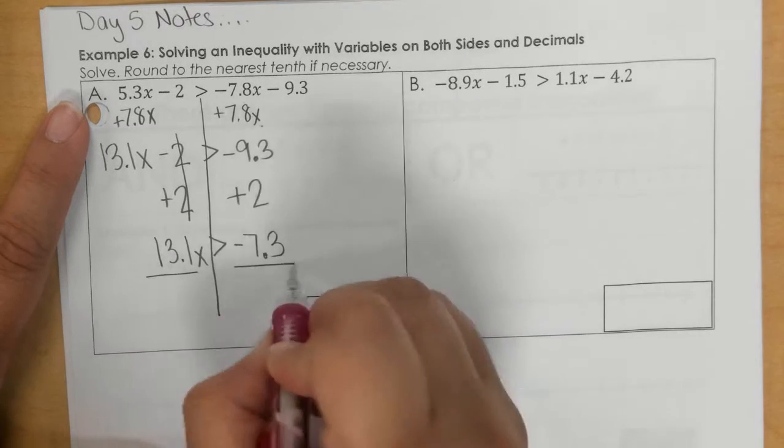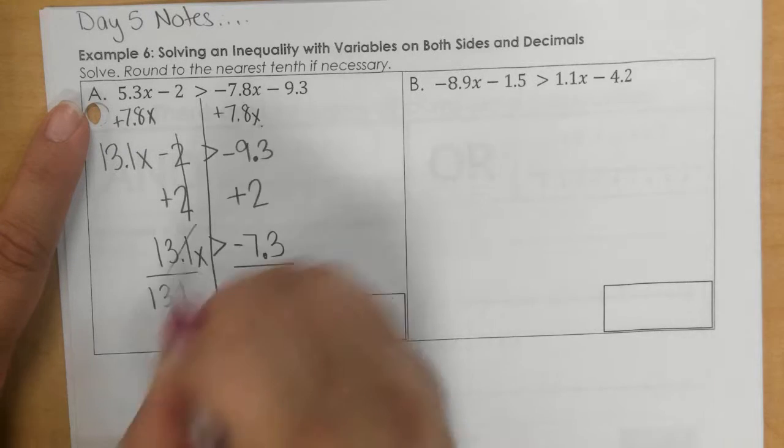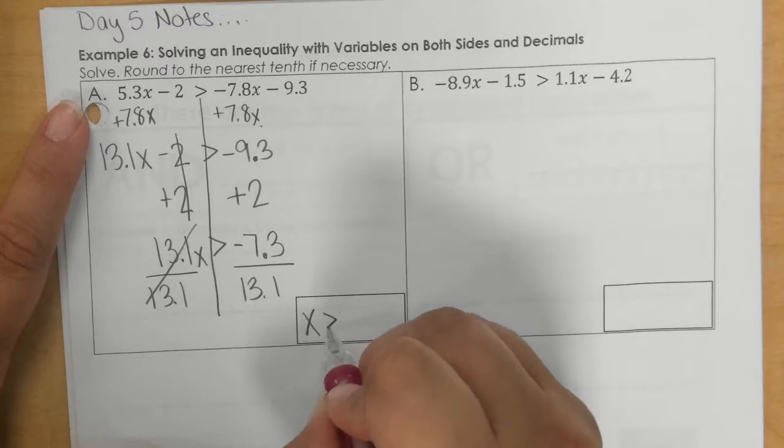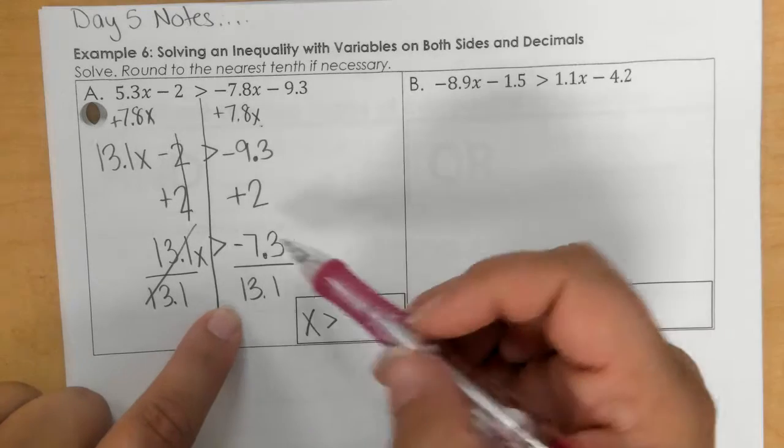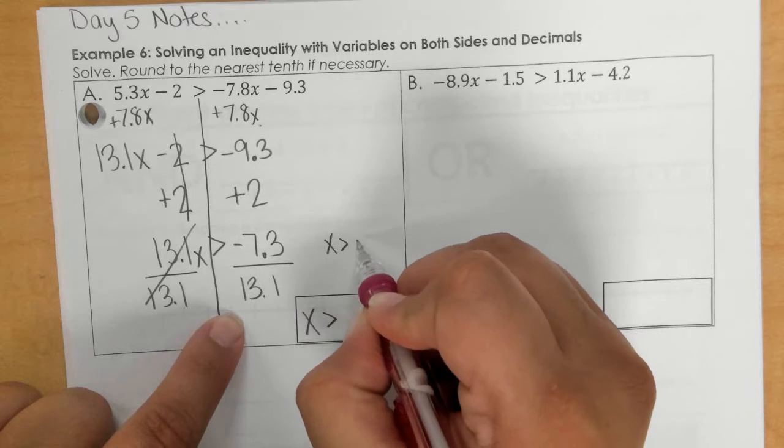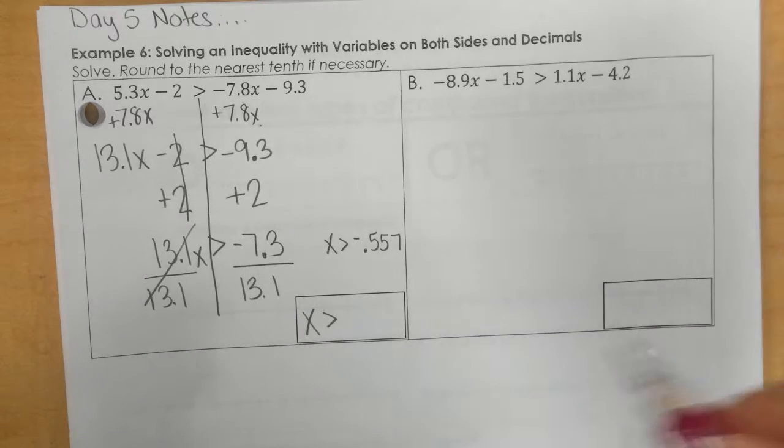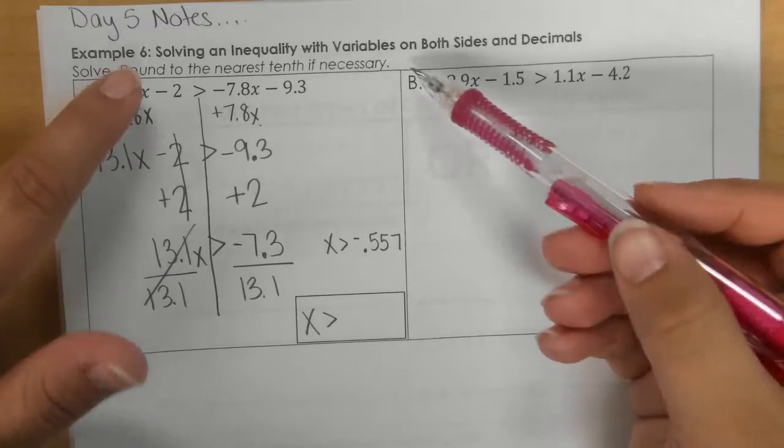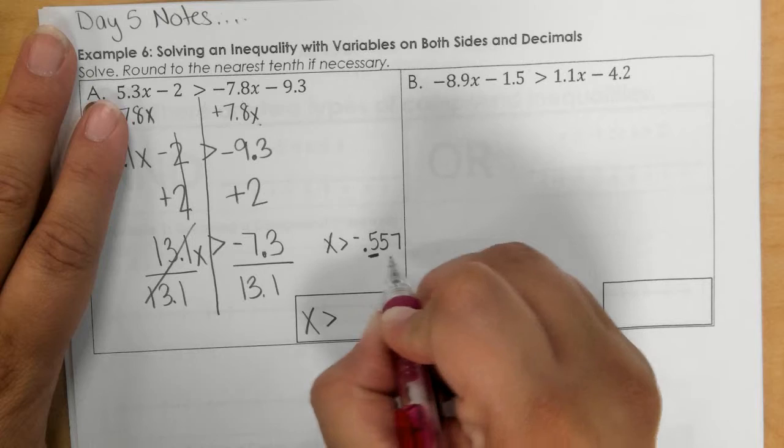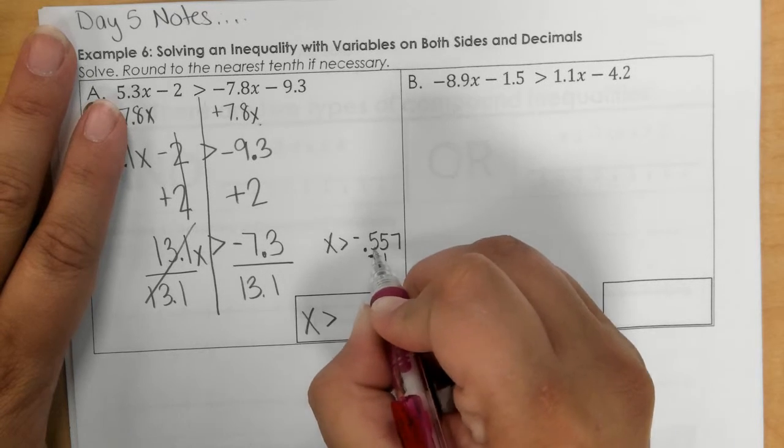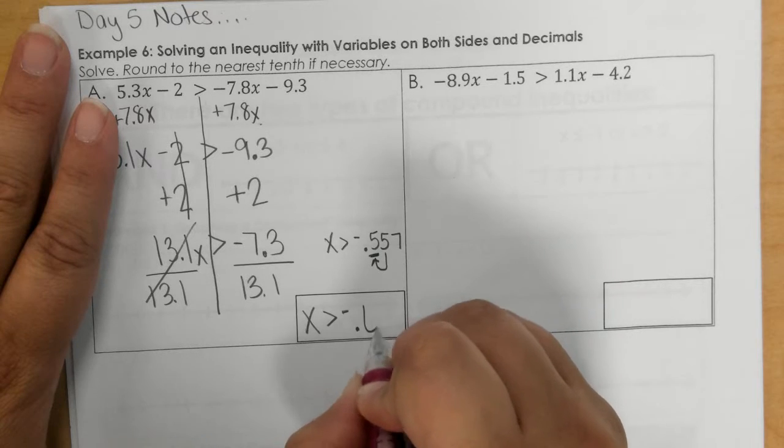And then we divide by the number in front of x, which is 13.1. Now, we divide it by a positive, so we leave the inequality greater than. And when I divide this, I get negative 0.557, and it keeps going. But it says that we need to round to the nearest tenth. So this 5 is in the tenths place, and this 5 makes this 5 go up.